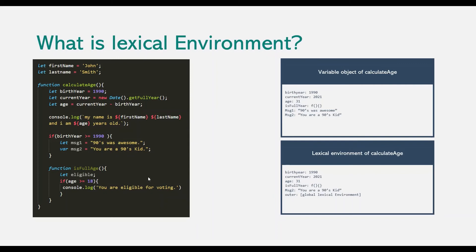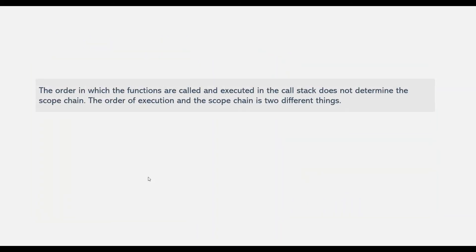So a variable object will contain all the variables and functions declared in that function, no matter whether they are declared inside a block or not. But a lexical environment will only contain those variables and functions defined in that current scope. We have seen that the concepts of execution context, scope, and scope chain are very related. The order in which functions are called and executed in the call stack does not determine the scope chain — the order of execution and the scope chain are two different things.